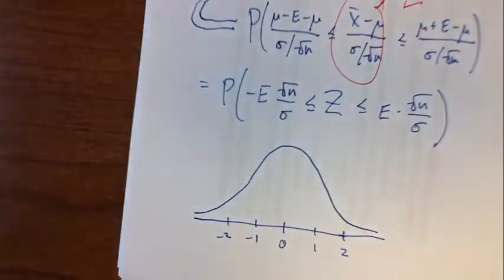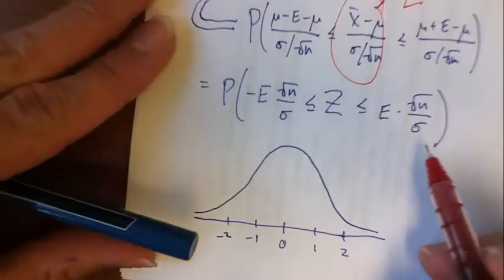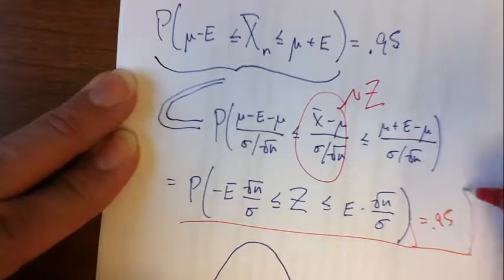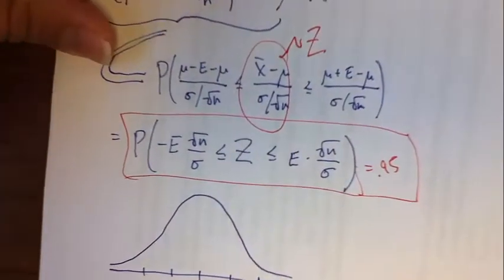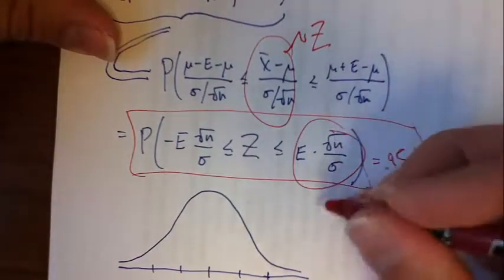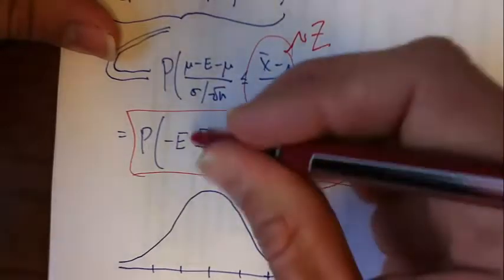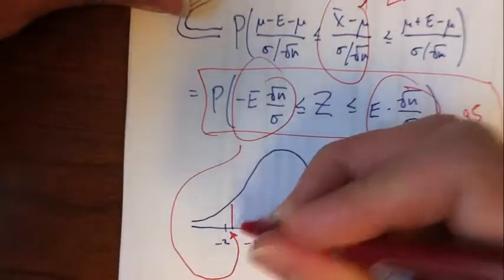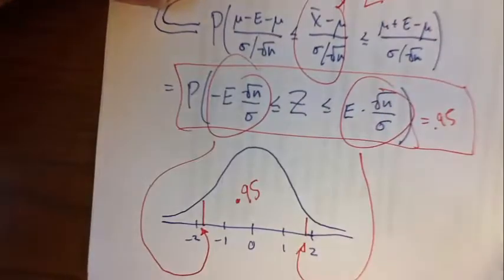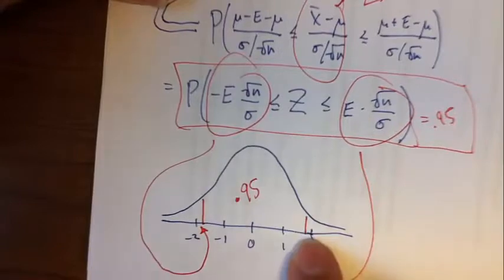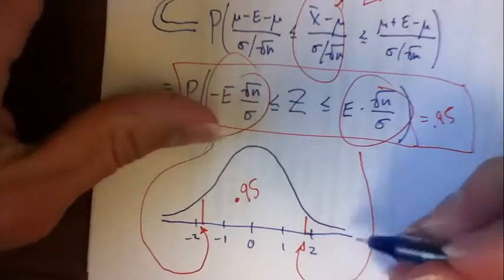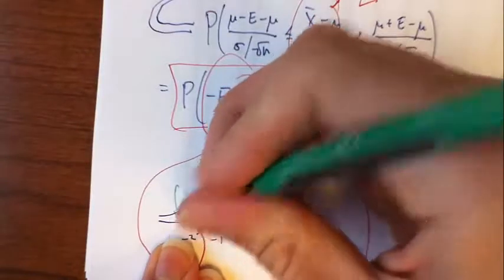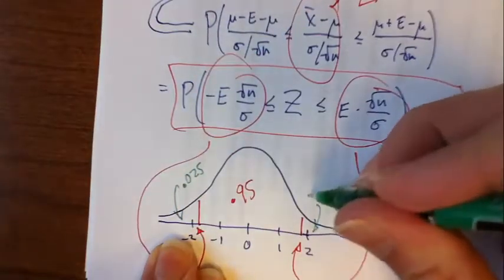This is sort of what the standard normal density looks like, centered at zero and has standard deviation one. What this expression says, what all this stuff says is that I'm looking for this mark and that mark is there, the chance that a standard normal falls between these two marks is 95%. What is that mark? Well, so basically, this is 95% in here, then I know that off to the left and right I have 2.5%.